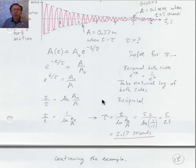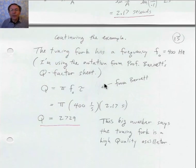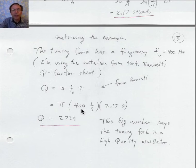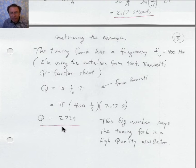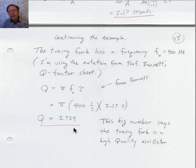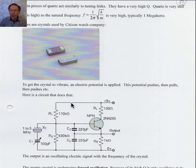Now I'd like to find the Q factor for this tuning fork oscillator. Using Professor Barnett's information sheet: we found τ = 2.17 seconds, and the natural frequency in my example was 400 hertz. Multiplying τ by the natural frequency and by π gives the Q factor. For good oscillators the Q factor can be a very big number — a hundred thousand for a really good one — and for something that quickly stops oscillating it might be around 10.